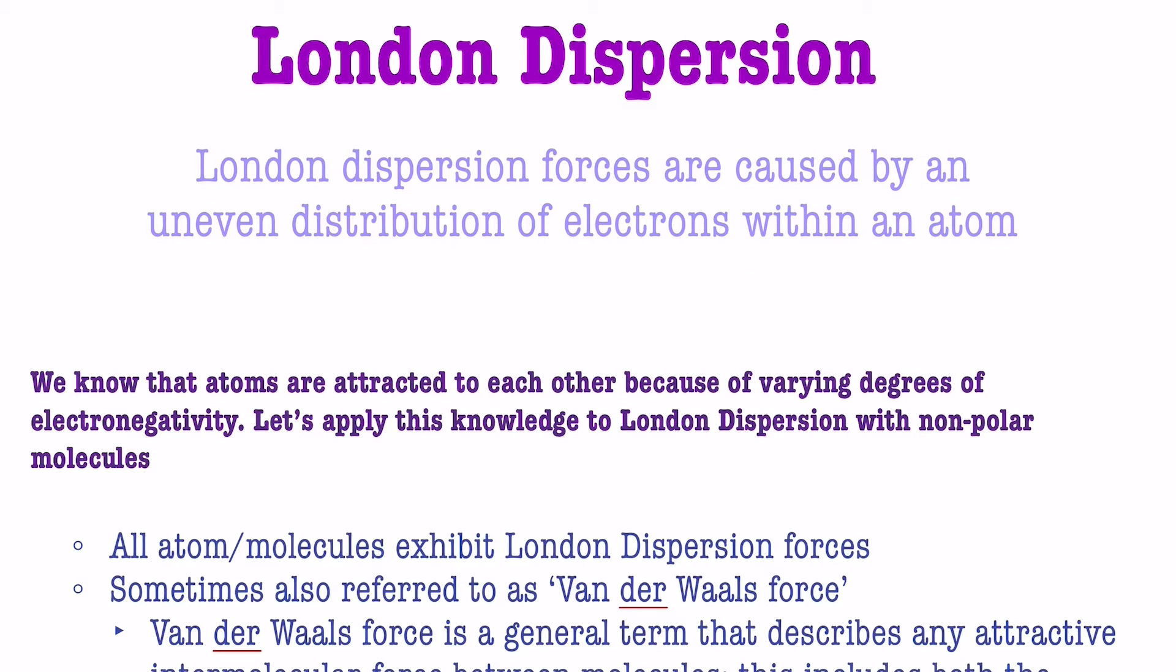London dispersion is an intermolecular force, which means London dispersion happens between molecules or atoms. What we know is that atoms are attracted to each other because of varying degrees of electronegativity. That is super important.